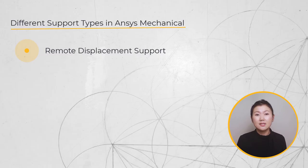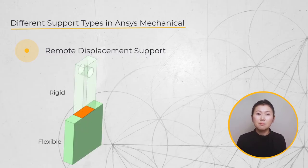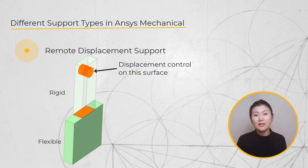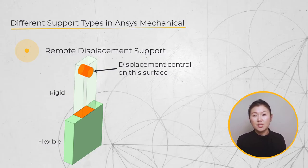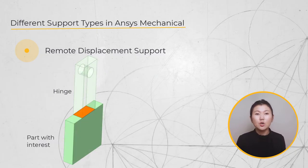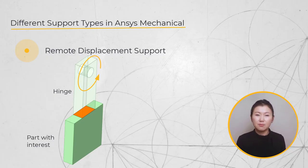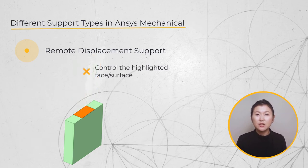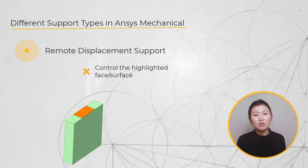Next, let us discuss the remote displacement support. Consider a rigid object bonded to the part's surface whose motion can be controlled at a specific location. Using the remote displacement support, we can transfer displacement or rotation from that rigid body to our part of interest without modeling the rigid part. For example, if a part is connected to a hinge that is not part of the model, we can apply a remote displacement centered at the hinge location and apply rotation to rotate the part without modeling the hinge itself.